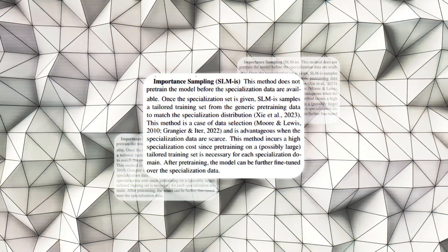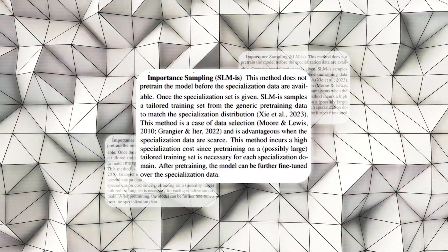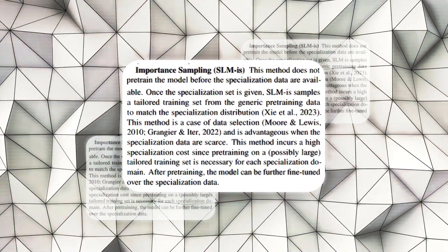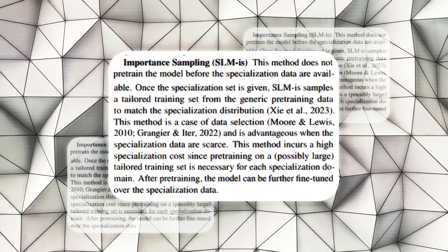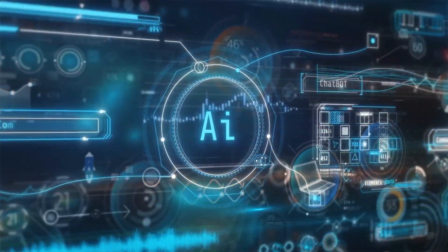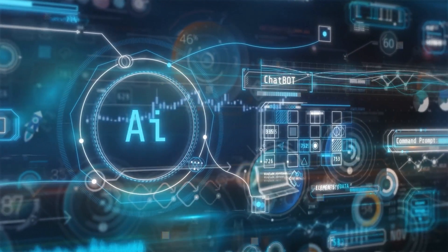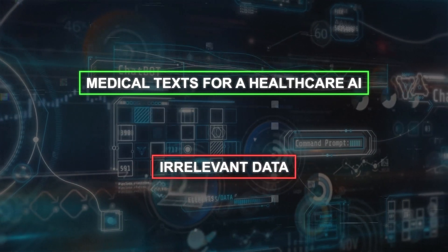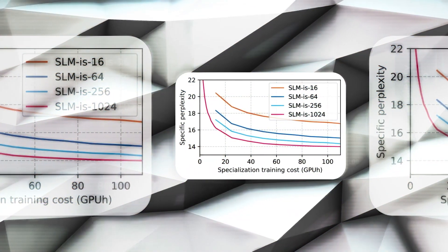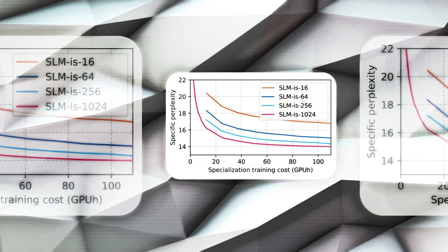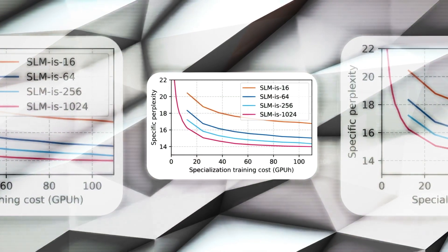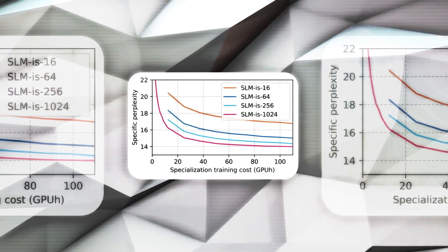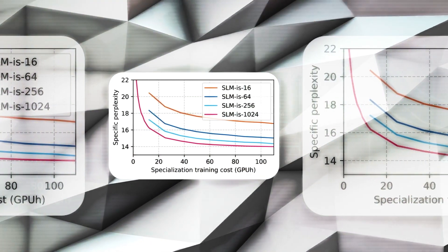To tackle these cost challenges, Apple's team investigated several strategies. The first is importance sampling, which prioritizes learning from data that is most relevant to the task at hand. This method ensures that models focus on crucial information, like medical texts for a healthcare AI, rather than irrelevant data. By honing in on the most pertinent data, importance sampling reduces the need for vast domain-specific datasets, saving on specialization costs.